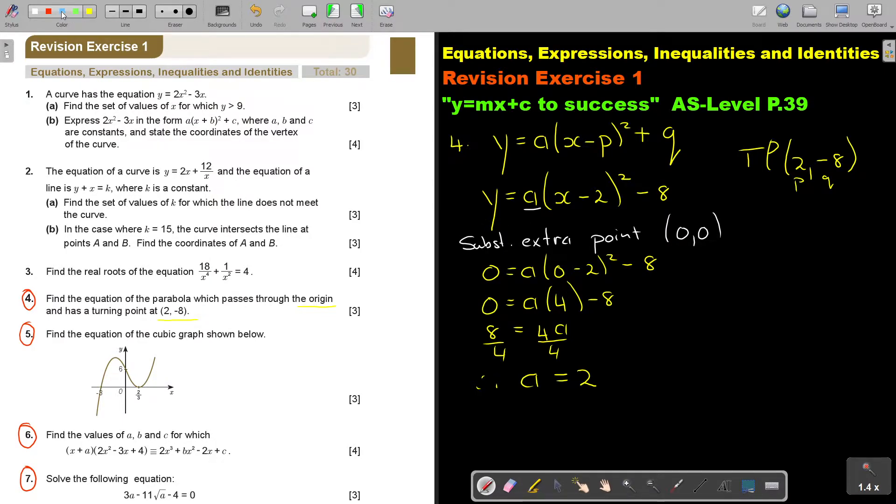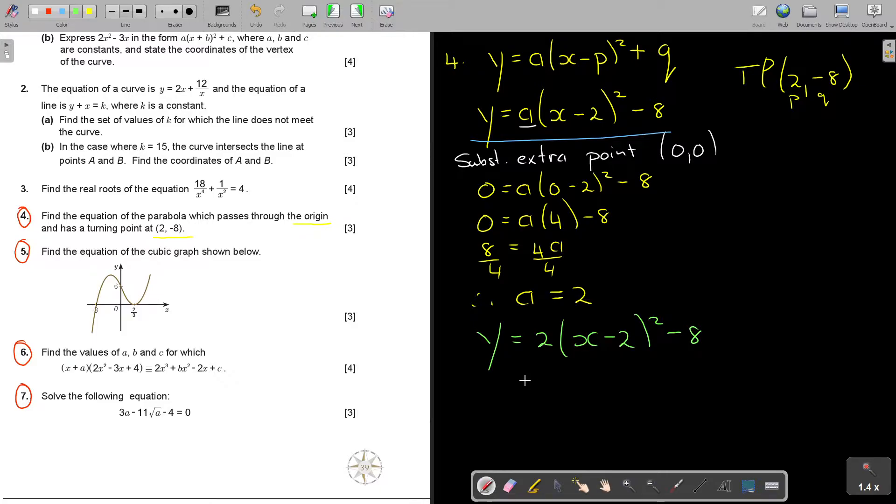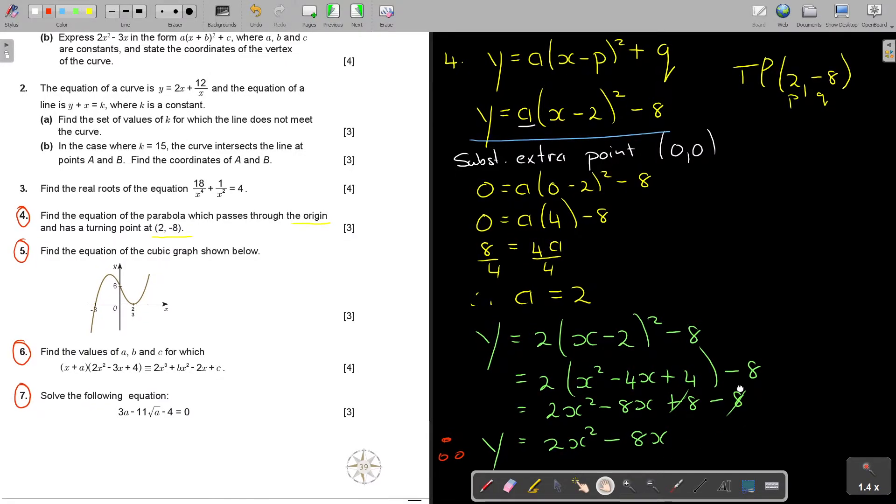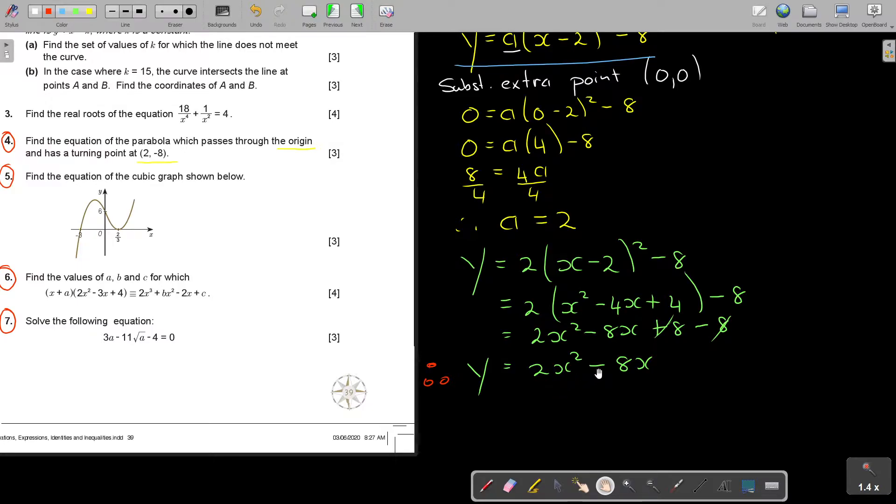And I can basically now go and substitute it back there. So Y is equal to 2 times X minus 2 squared minus 8. Now I must simplify this. I do the short way, so it's X squared, multiply with each other, multiply by 2. So it's negative 4X plus 4 minus 8. And that's going to be 2X squared minus 8X plus 8 minus 8. That's going to be 2X squared minus 8X. Therefore, Y is equal to 2X squared minus 8X, and that's the equation of the parabola.